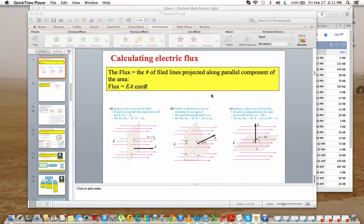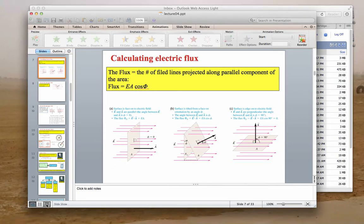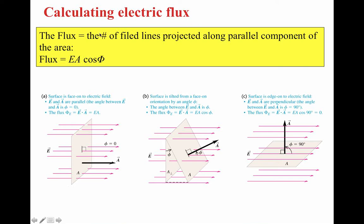I'm going to start from the definition of calculating the electric flux. The definition of the electric flux is simply the number of field lines projected along the parallel component of the area. So the flux Φ is nothing more than E, the electric field, multiplied by the area and multiplied by the cosine of the angle θ — we used θ because we used Φ for the electric flux.